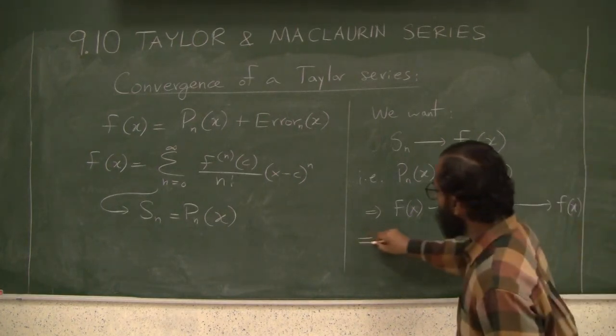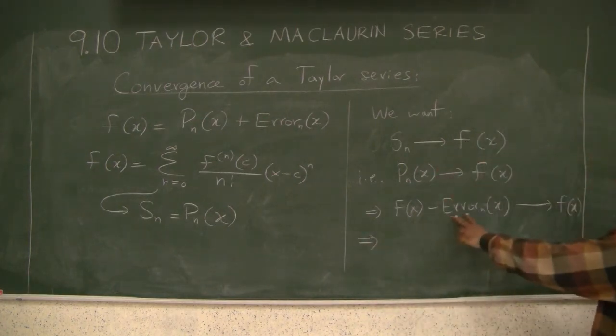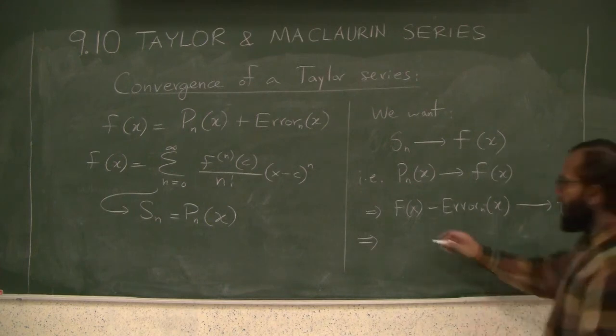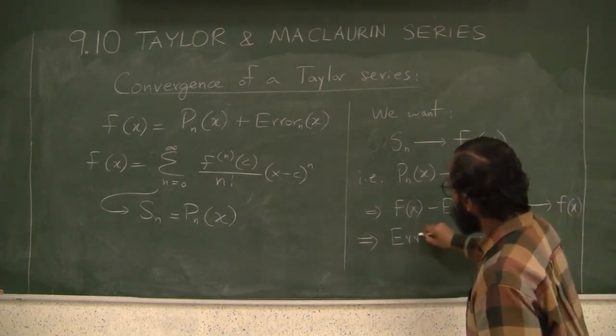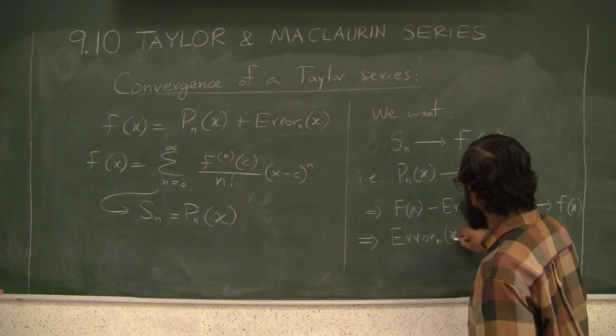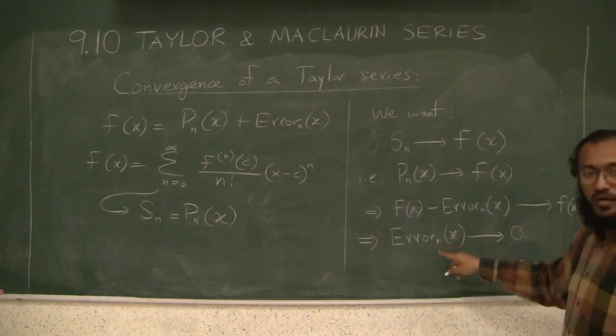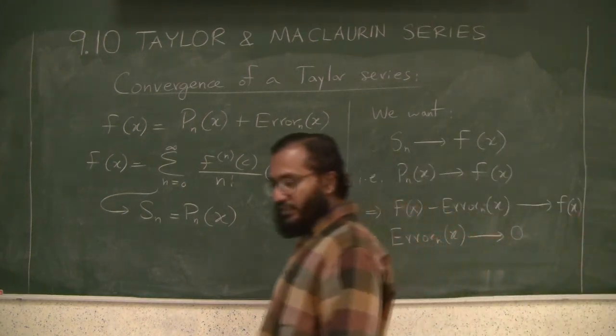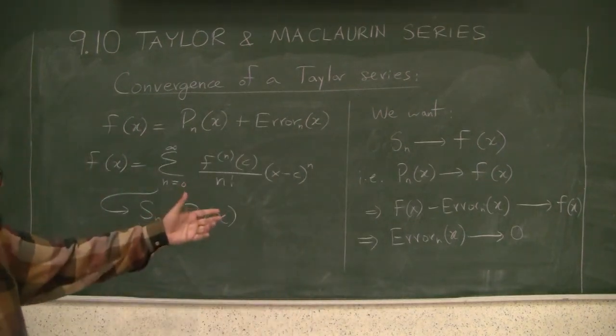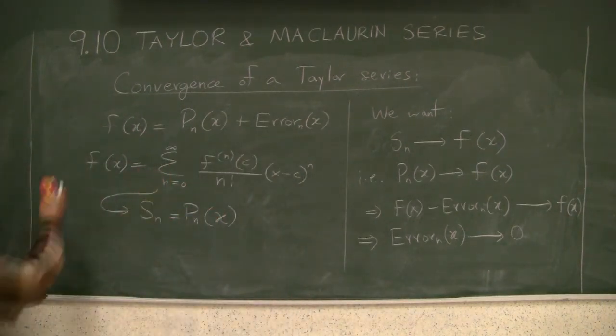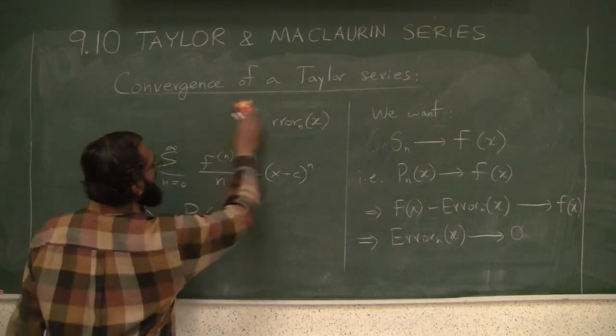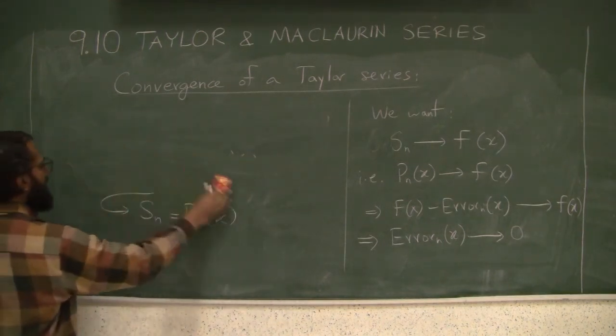What this means, how can f of x minus the error term converge to f of x? Only if the error term goes to 0 as we go to higher and higher n. And that essentially is actually the proof of the next theorem we are going to write down, the theorem about convergence of a Taylor series.